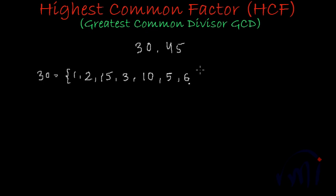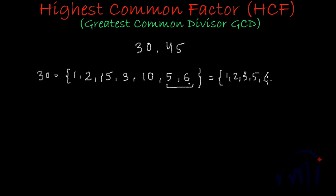I think I have got all the possible factors of 30 because the difference between the two last factors is only 1, so we can stop here. All the possible factors of 30 in increasing order are: 1, 2, 3, 5, 6, 10, 15, and 30 — since the number itself is also a factor of the number.